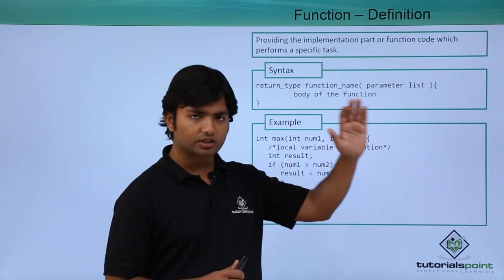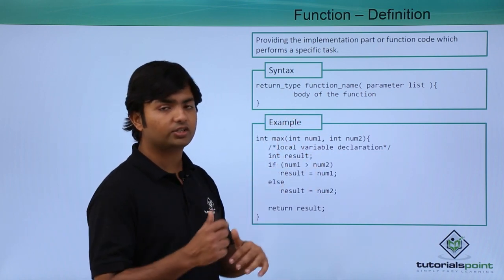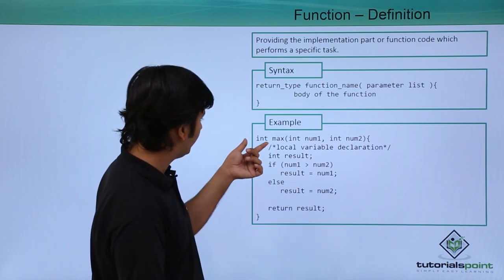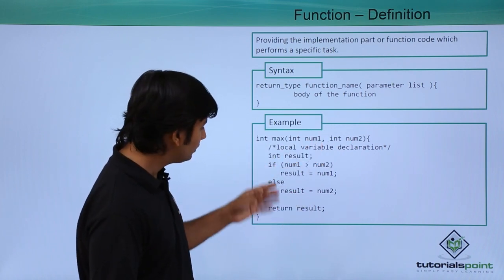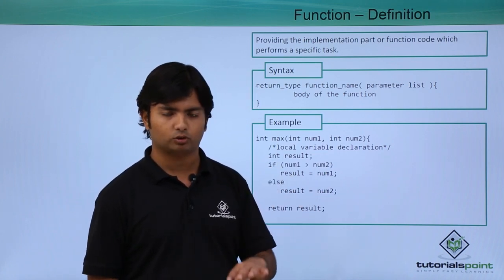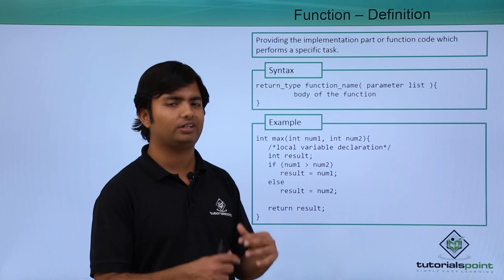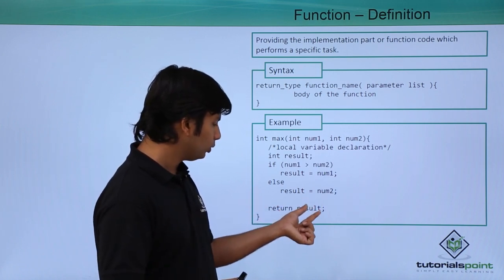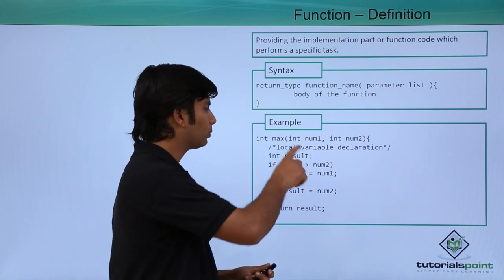Once the declaration is done, the next thing is to define the function. The signature should remain the same at every point — whether you are declaring it, defining it, or invoking it. Here you can see int max with a couple of arguments. The return keyword will basically terminate the execution of the function, so logically we must put it at the end.